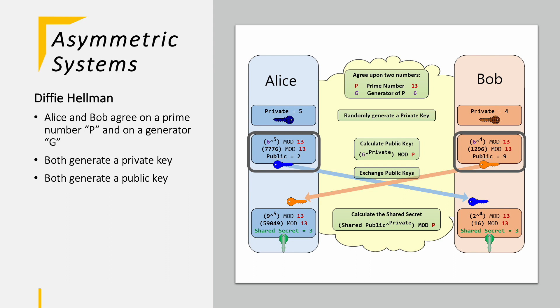2 now becomes the public key of Alice. Bob is doing the same with its own private key and comes up with the public key of 9.